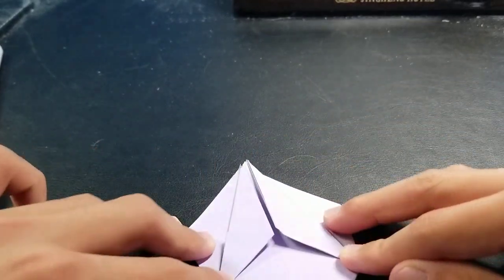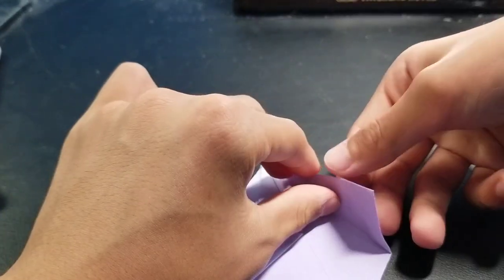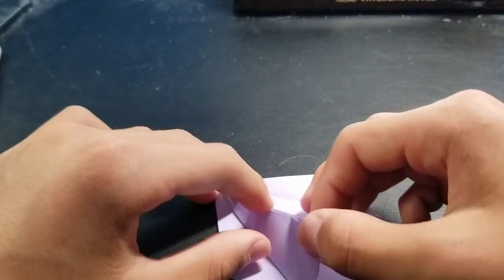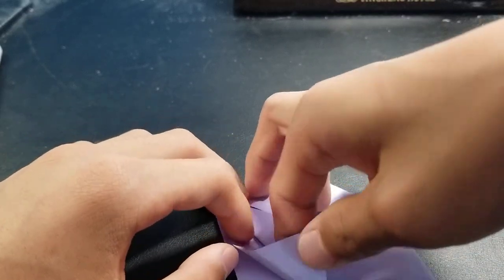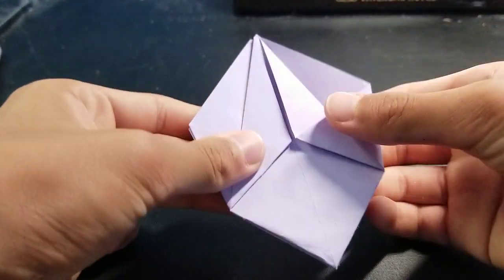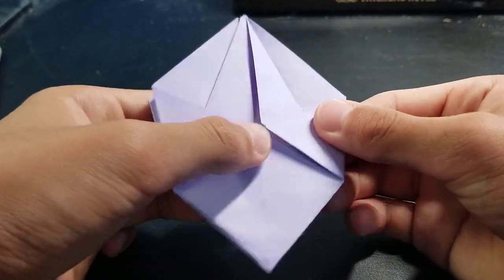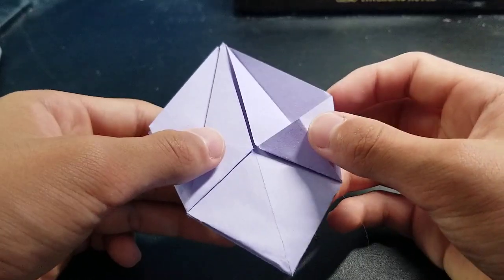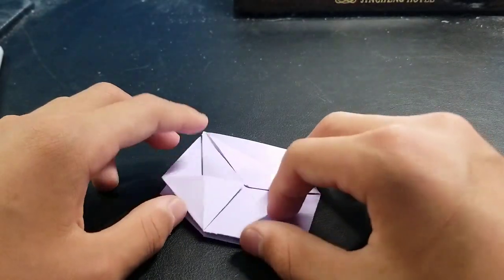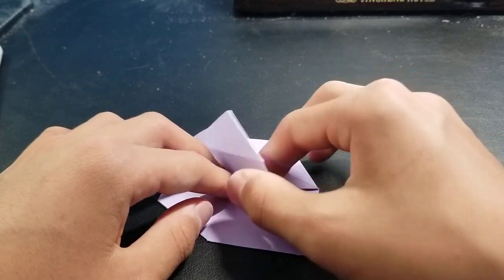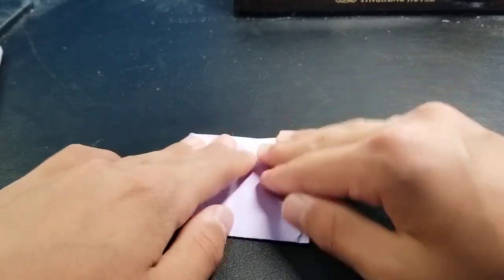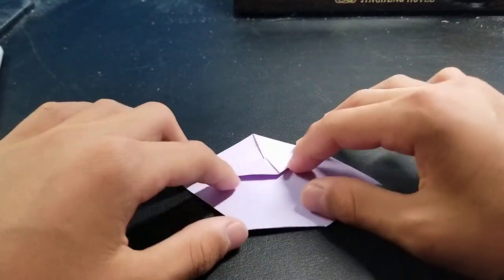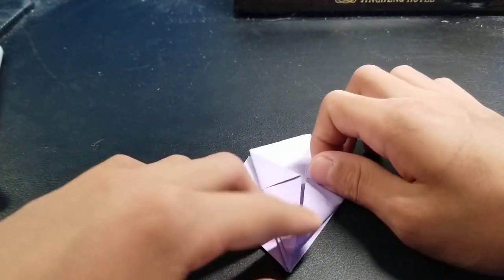Now you want to fold this edge up like this and fold it on this side. And now fold this side back and then fold this one up like that and then flatten this part out. So fold this part, do the same thing on this side.